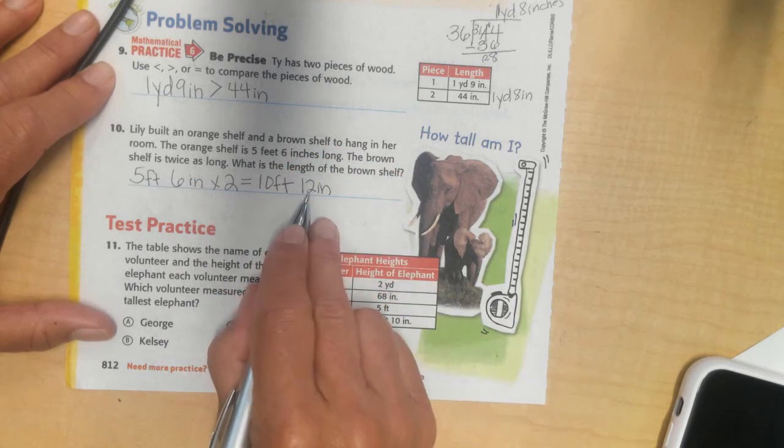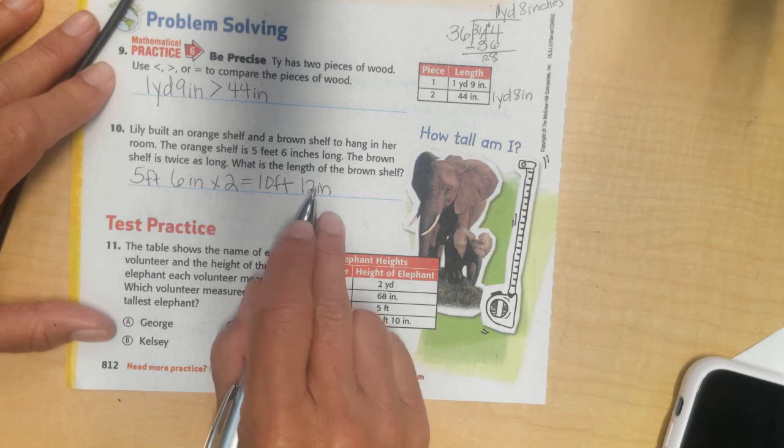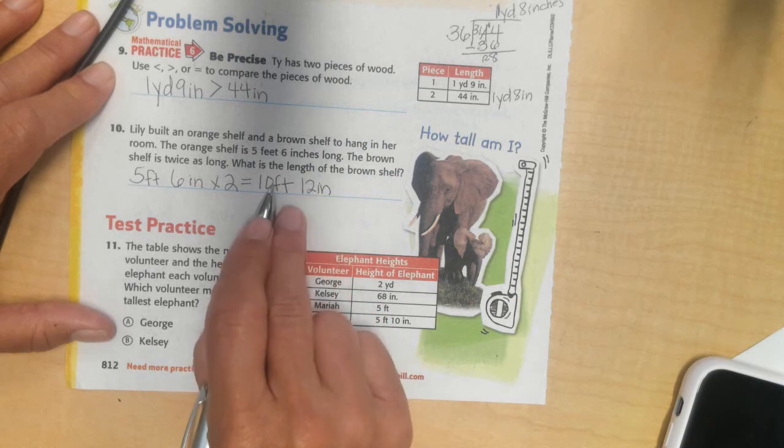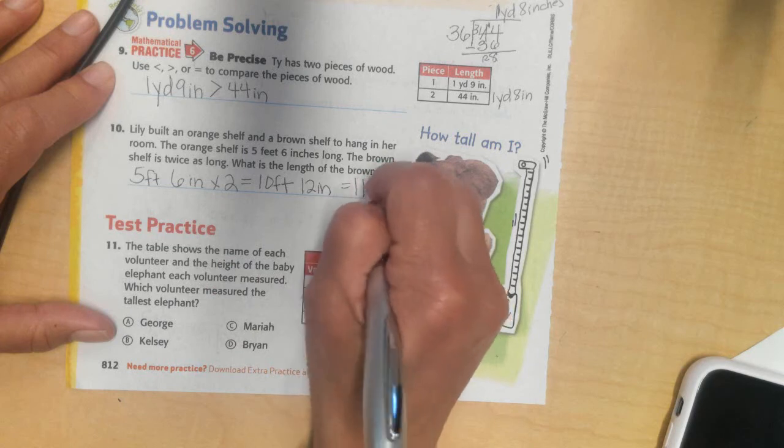But wait, hold up, right? 12 inches is a foot. So, I'm going to convert this into a foot now and add it to my 10 feet and I will end up with 11 feet.